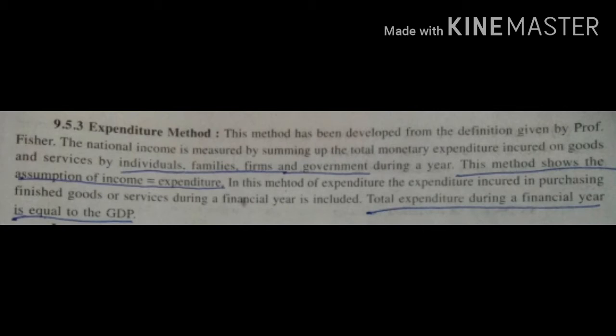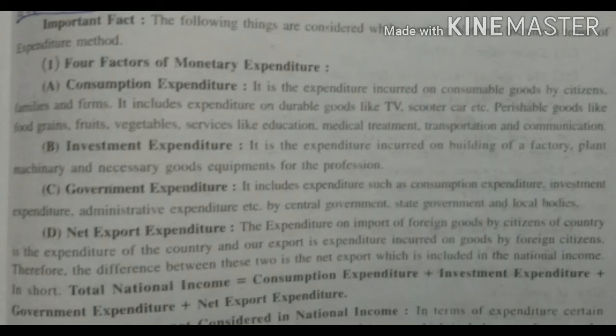Thus, national income equals consumption expenditure plus investment expenditure plus government expenditure plus net export expenditure. The following things are considered while counting national income in terms of the expenditure method. The various components of final expenditure considered in national income can be divided into four parts.